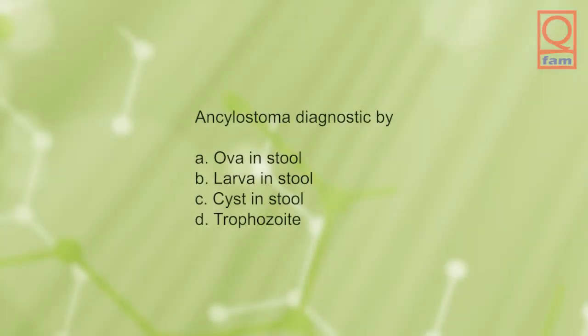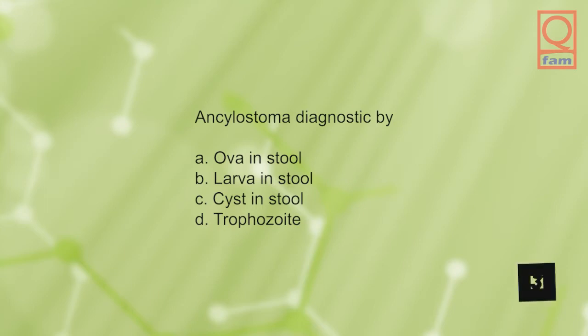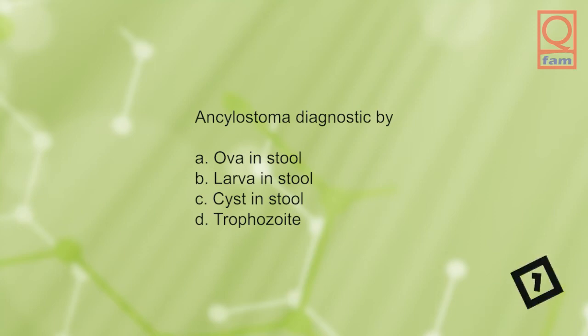Ancylostoma is diagnosed by: A) ova in stool, B) larvae in stool, C) cyst in stool, D) trophozoite. The answer is A, ova in stool.